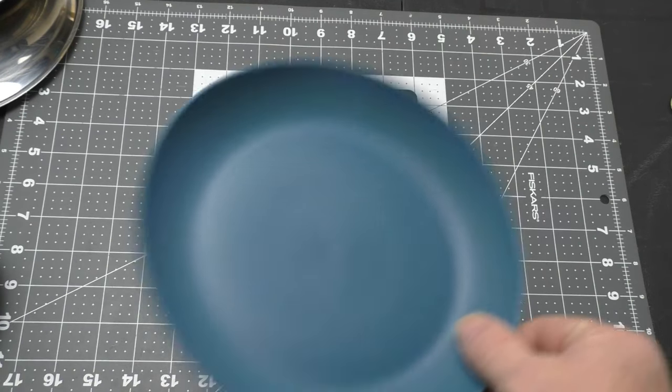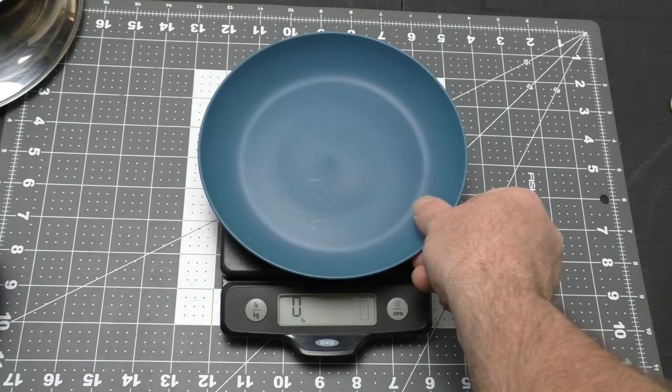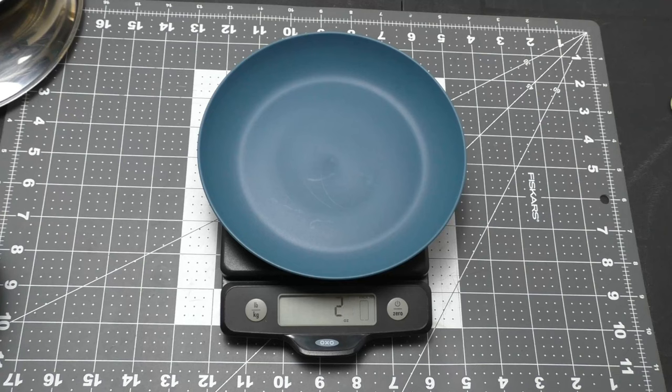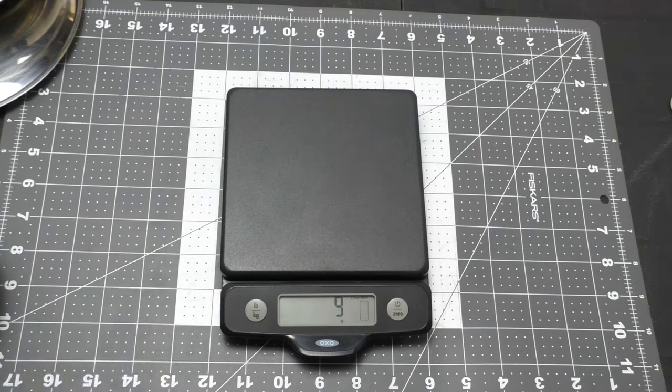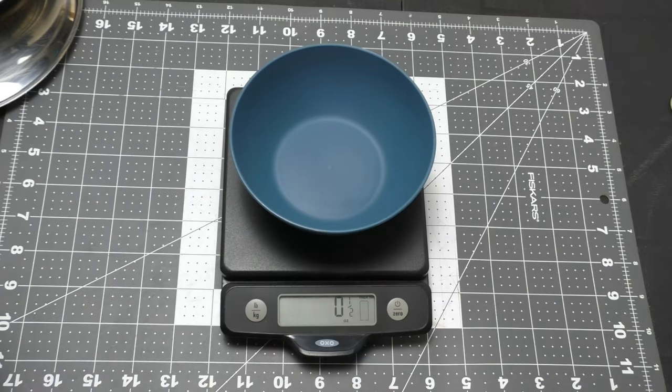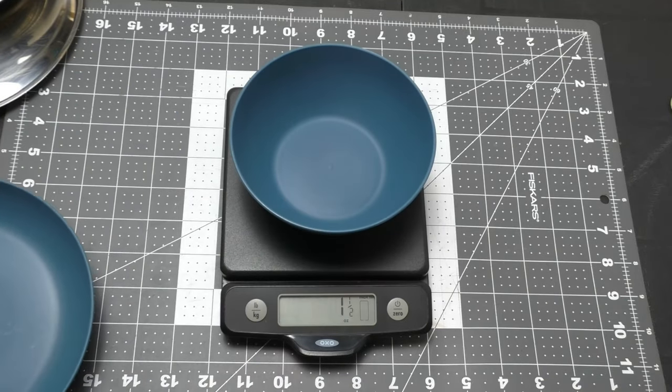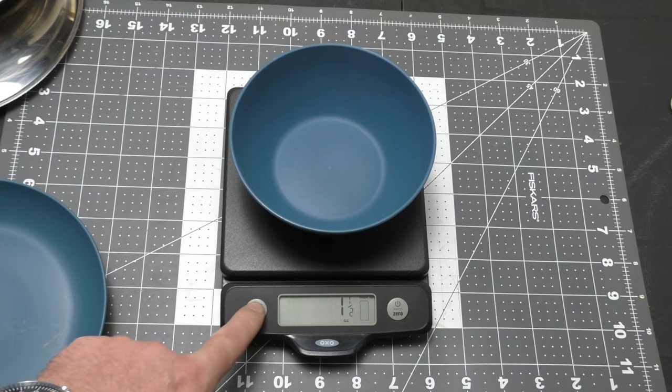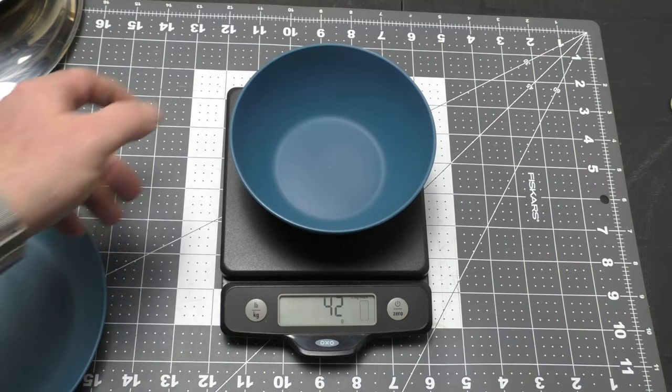All right. First, we're going to do the plate in pounds. The plate weighs exactly two ounces or 57 grams. So that's pretty light. The bowl is one and a half ounces or 42 grams.